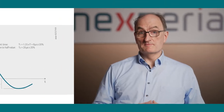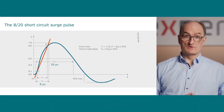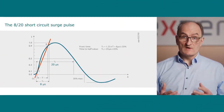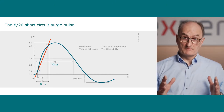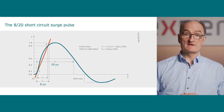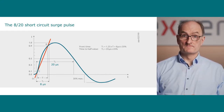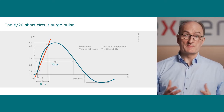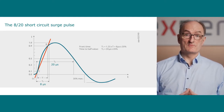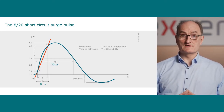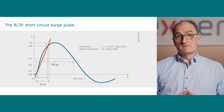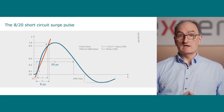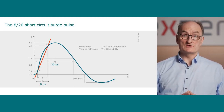The 8/20 microsecond short circuit surge pulse, shown here, has a rise time of 8 microseconds and a fall time of 20 microseconds. Voltages for surge are typically lower compared to electrostatic discharge pulses, but due to the longer duration of the pulses, they can carry a lot of energy.